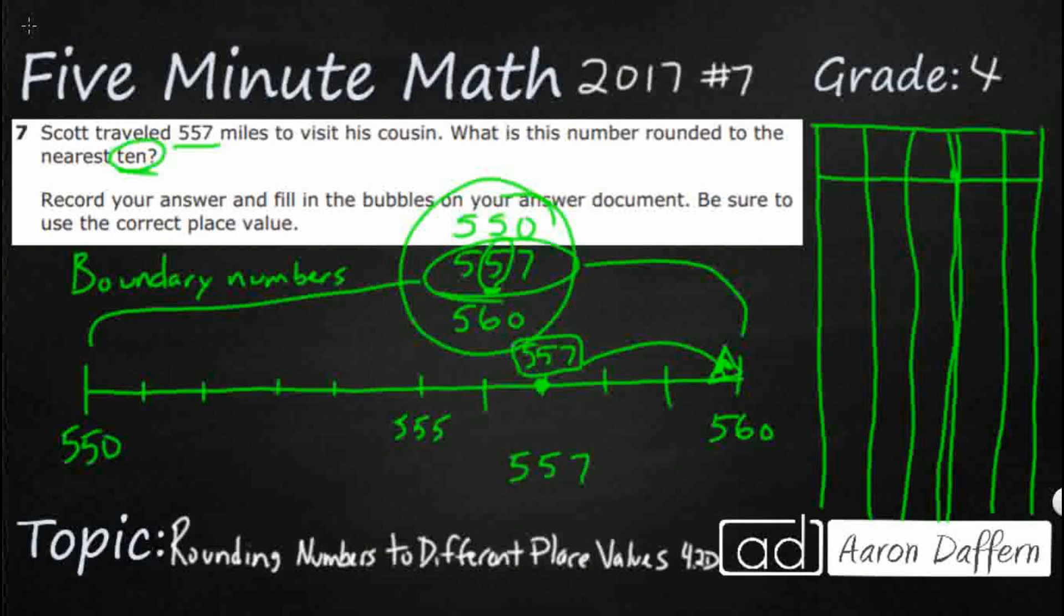And what we do, there's kind of a strategy for doing that, is you take a look at the place that you were rounding to, the tens place. You underline it and you circle the digit to the right. And you look at the digit at the right.